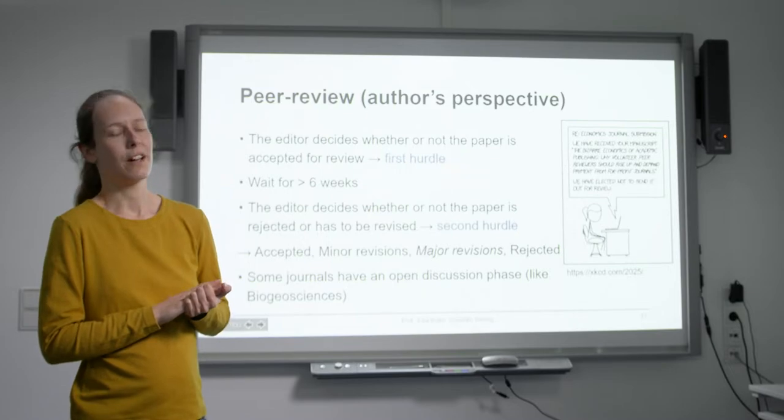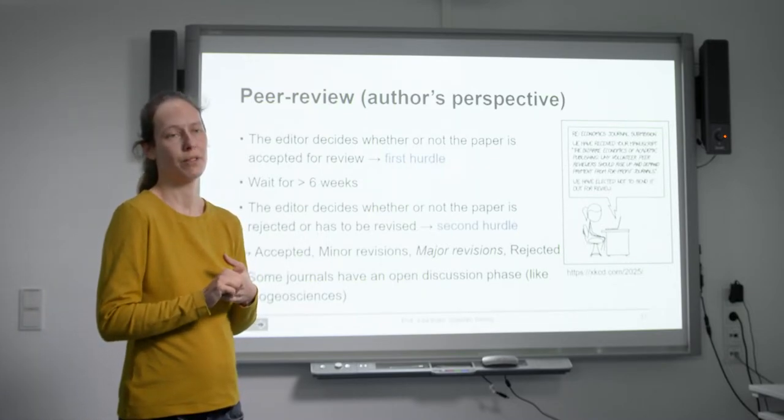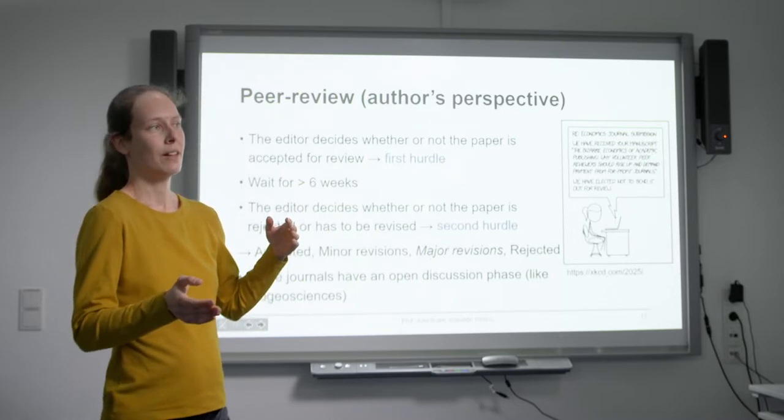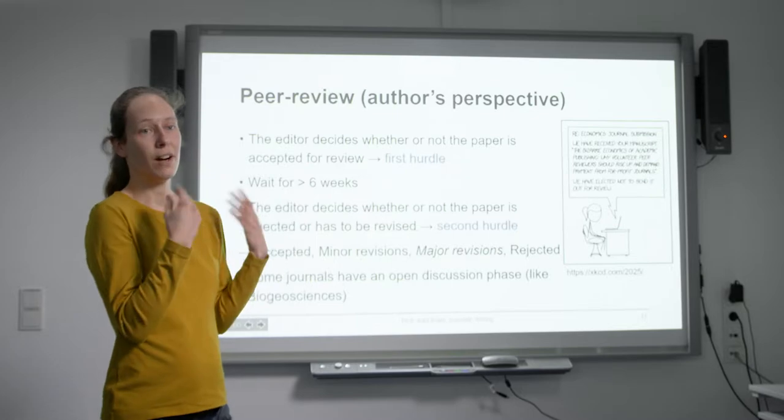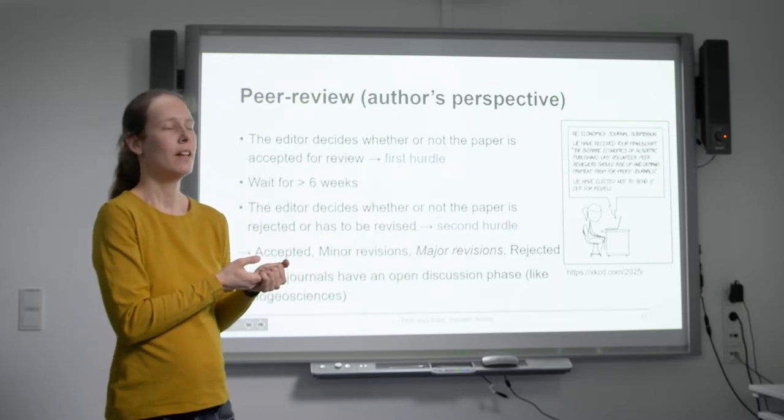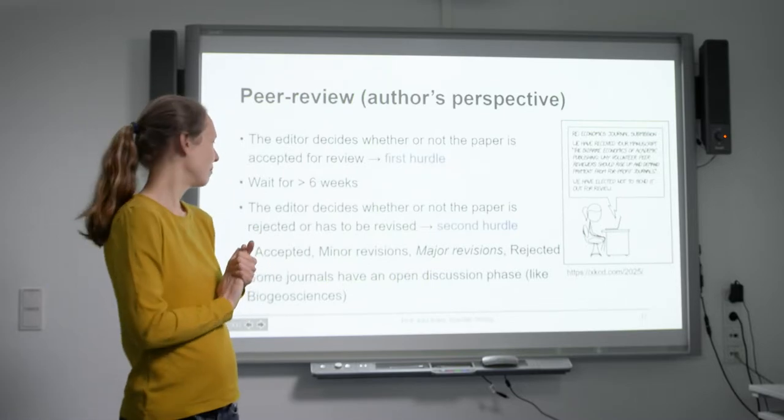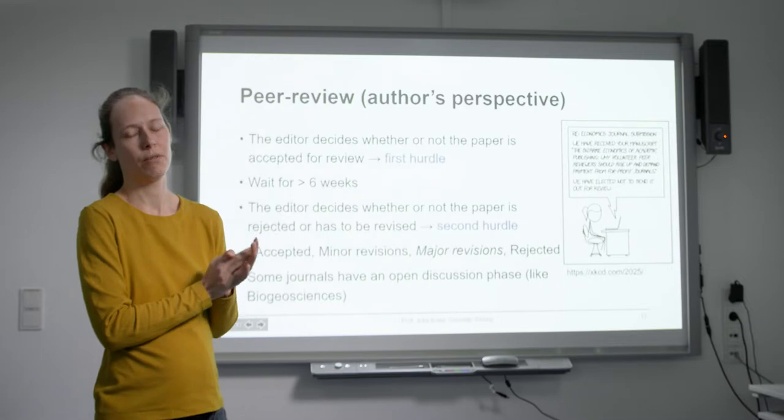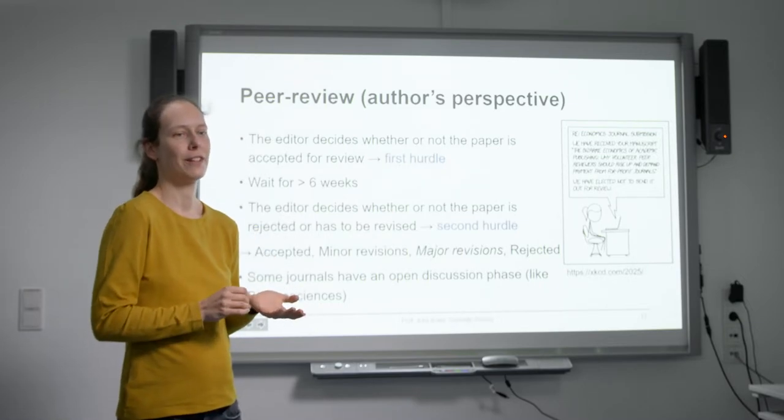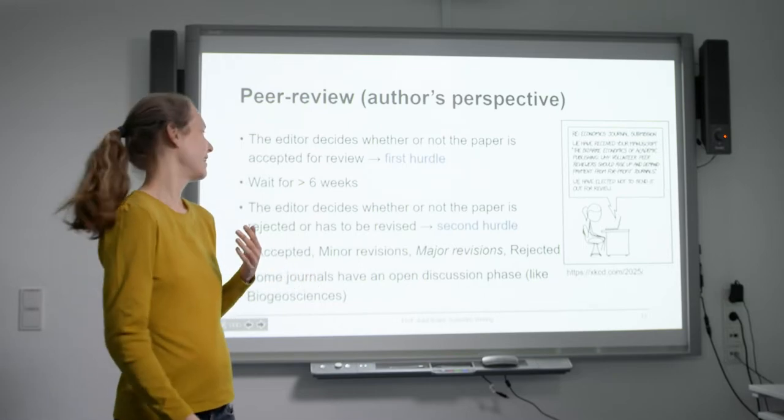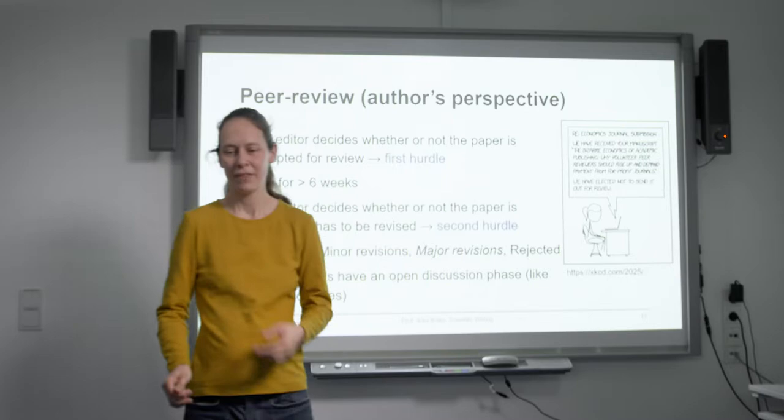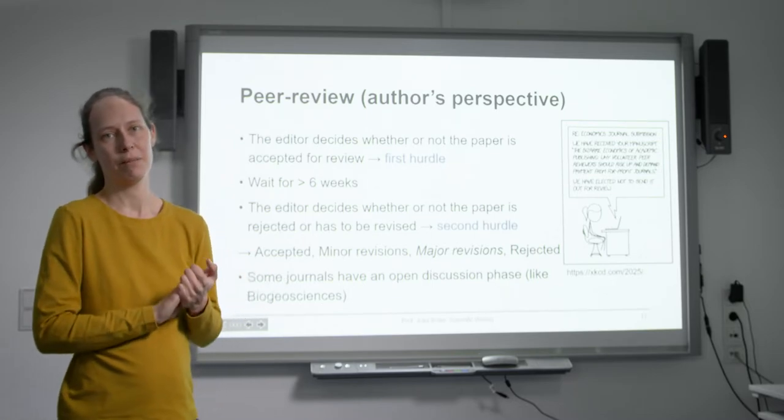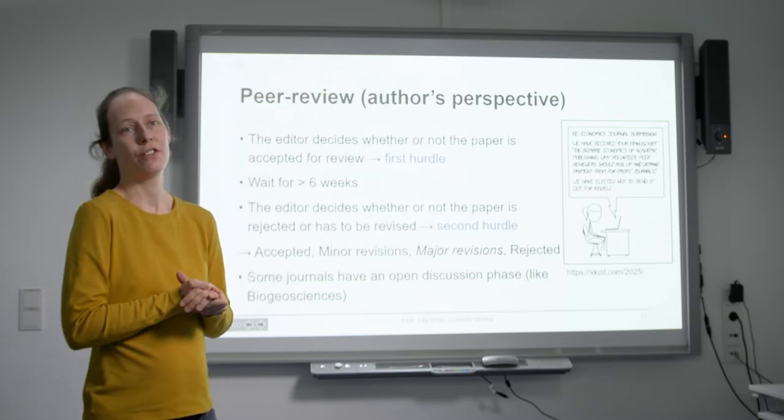Some journals have an open discussion phase, like Biogeosciences, and I'll show you some examples from this journal because that's where I last published my paper. An open discussion phase means your original version, all reviewers' comments, your answer to the reviewers, and your final version are all published. I really like this because first your original version is already published, so people can read and cite it before you run through the review process. And I have the impression that once this original version is published, it's less likely to be rejected at this point. It's more likely you get an additional round of feedback maybe, but if you really try, your paper will be published in the end. Open discussion journals are a good idea.